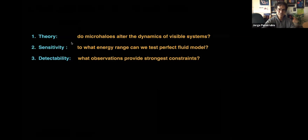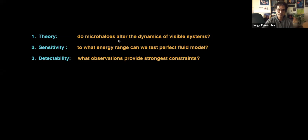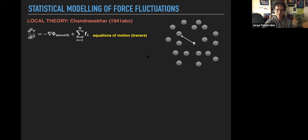This talk will try to answer three questions. First: do microhalos of 10^-6 solar masses alter the dynamics of visible systems? This is important because if the answer is yes, we might hope to put constraints on the dark matter particle energy or mass. Second: how sensitive are we, and to what energy range can we actually test the perfect fluid model? Finally: what are the best observational systems to put constraints on the truncation of the subhalo mass spectrum?